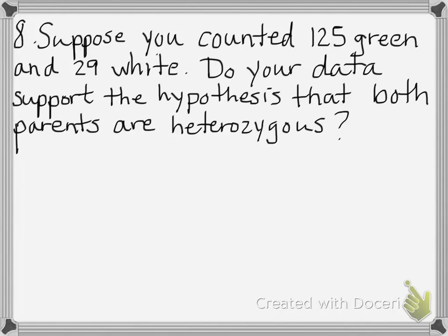Now, how do we get expected? Let's go back up to the problem. According to your chi-square test, do your results support the hypothesis that both parents were heterozygous? So that's when you look at the chart — that's when you have to know that cross. This parent's heterozygous and this parent's heterozygous. So what would you expect? That they'd be like 50-50? Nope. Don't guess — work it.